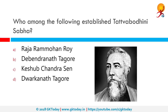Who among the following established the Tattva Bodhini Sabha? The correct answer is Debendranath Tagore. Before Debendranath joined the Brahmo Samaj, he had organized a Tattva Ranjini Sabha at Calcutta. The same Sabha was later known as Tattva Bodhini Sabha. The objective of Tattva Bodhini Sabha was to encourage religious enquiries and disseminate the essence of the Upanishads.